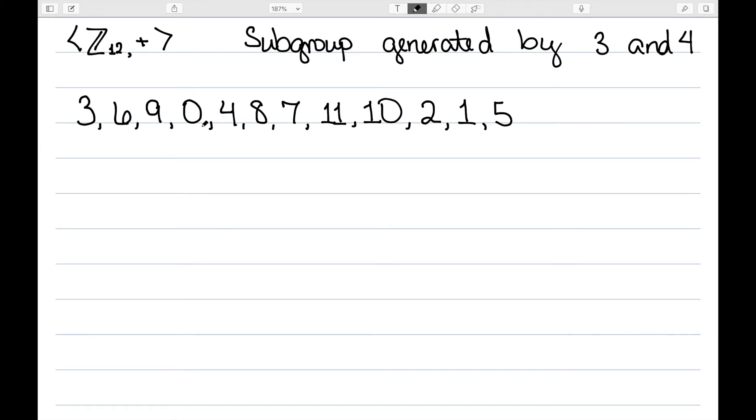Now let's take a look at this list. We have 0, 1, 2, 3, 4, 5, 6, 7, 8, 9, 10, and 11. So the subgroup generated by 3 and 4 is actually all of Z12. So we actually got a trivial subgroup whenever we tried to find the subgroup generated by 3 and 4.